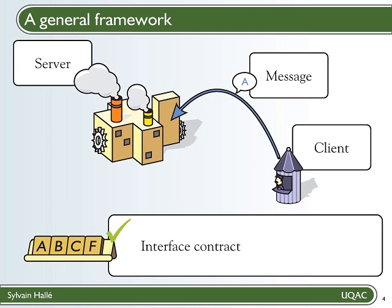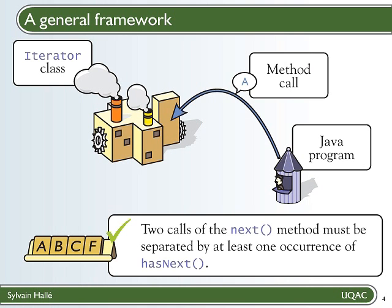Now that we have defined this basic terminology, we can revisit the original scenario of a client and a server interacting through messages that must follow some interface contract, and we can see how it can model a range of different contexts. For example, in an object-oriented programming language such as Java, one can think of the server as an instance of some class, say, iterator, the client as a Java program that uses that instance, and the messages as method calls and return values. Then the interface contract defines valid sequences of methods one can call on an instance of the iterator. We have an example here that says that two calls of the next method on the same instance of an iterator must be separated by at least one occurrence of method hasNext — that is, you should always check whether the iterator can return a new element before asking for that element. We can see that this is indeed a natural constraint on the use of an iterator, and that it involves sequences of method calls. It is not a property that you can express or check by looking at method calls individually.